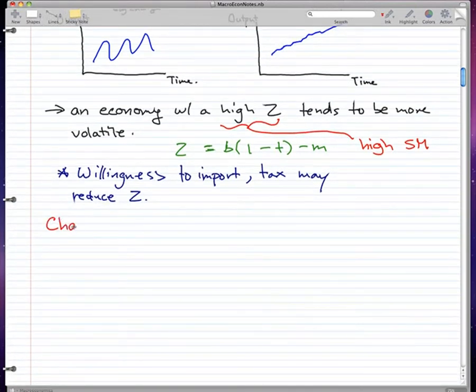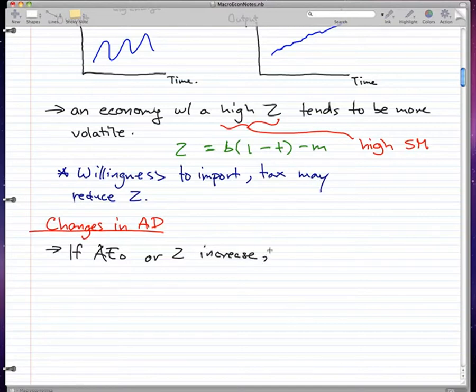Changes in aggregate demand. What I want you to know is if aggregate expenditure or Z increases, but not due to price changes, then AD or aggregate demand moves right.